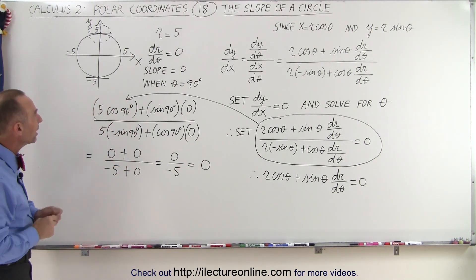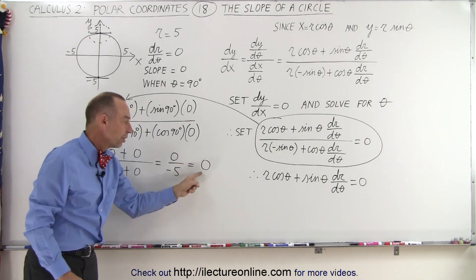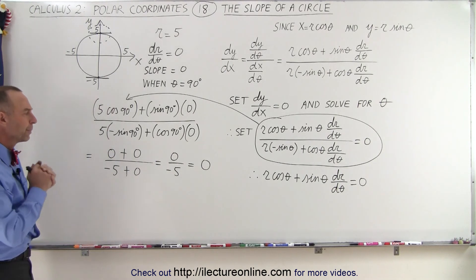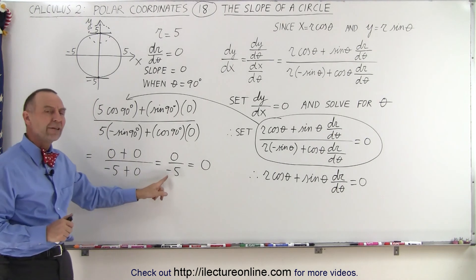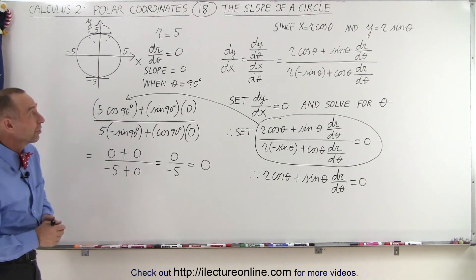So you can see that, yes indeed, when we plug in the values of theta equals 90 degrees, we get this expression and we find that it's equal to 0. But notice we also have a negative 5 in the denominator. And you say, well, does that negative signify anything? And in a way, it does.